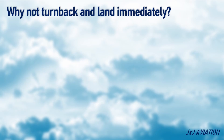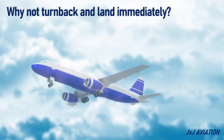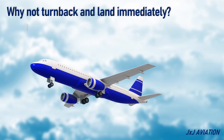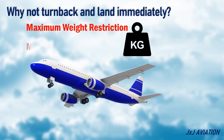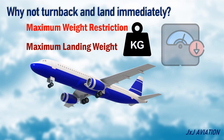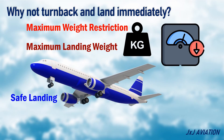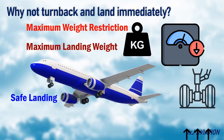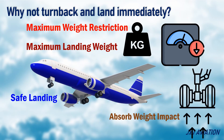Why not turn back and land immediately? Almost all aircraft have a maximum weight restriction during landing, called the maximum landing weight. If an aircraft weighs less than this weight, a safe landing can be ensured. A safe landing means that the landing gear can absorb the weight impact of the aircraft during landing. So it has to be ensured that the aircraft weight during landing is less than the maximum landing weight.